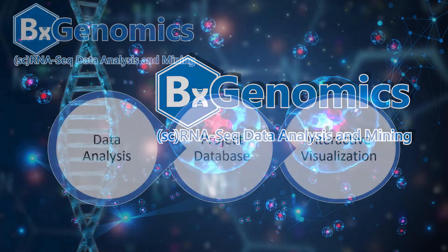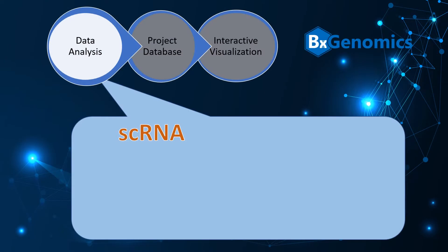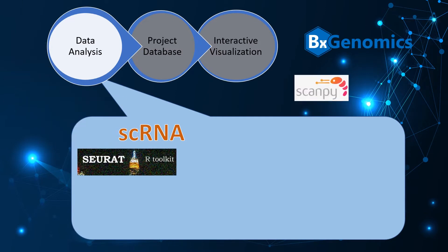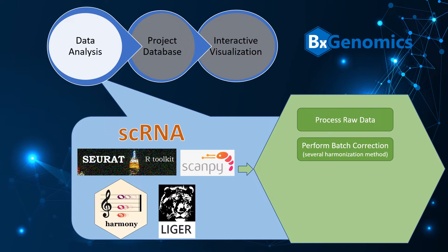The software system includes three key components. First, powerful data analysis pipelines. For single cell analysis, several widely used tools are integrated together to process raw data, perform batch correction and choose the best harmonization method, and transfer cell labels from a reference.